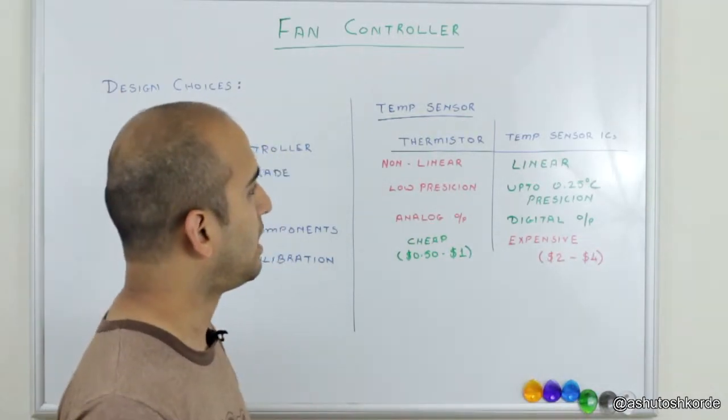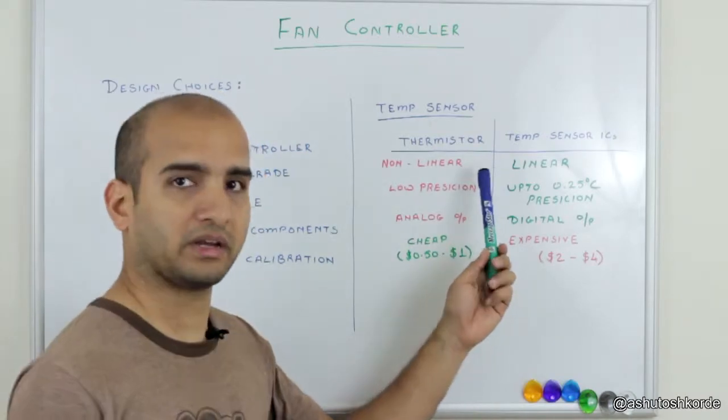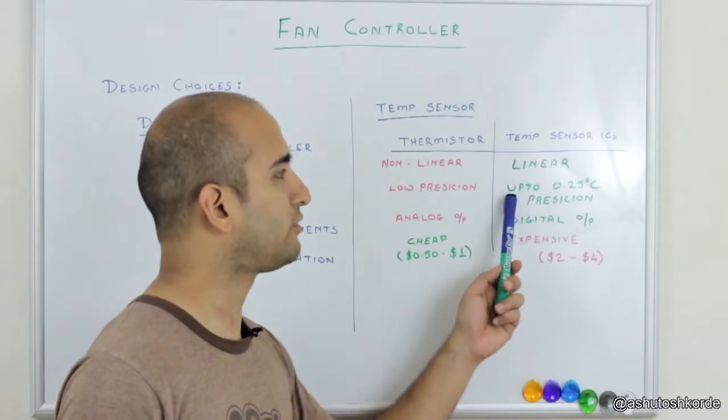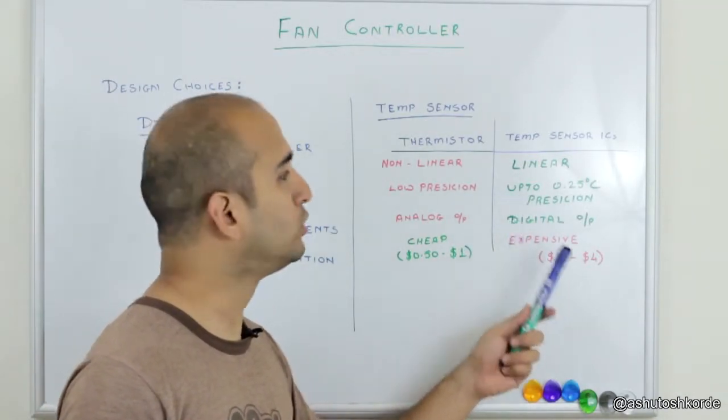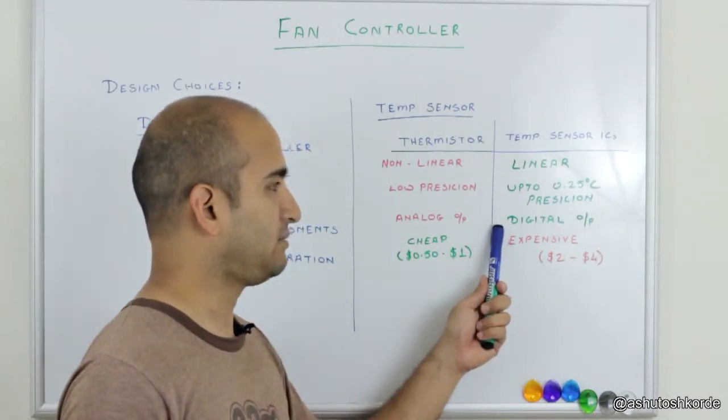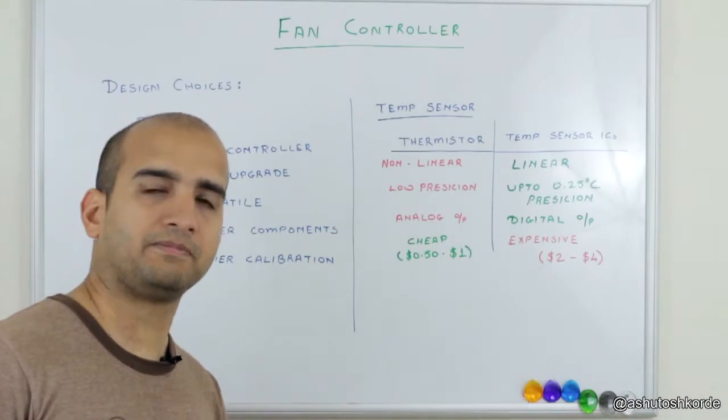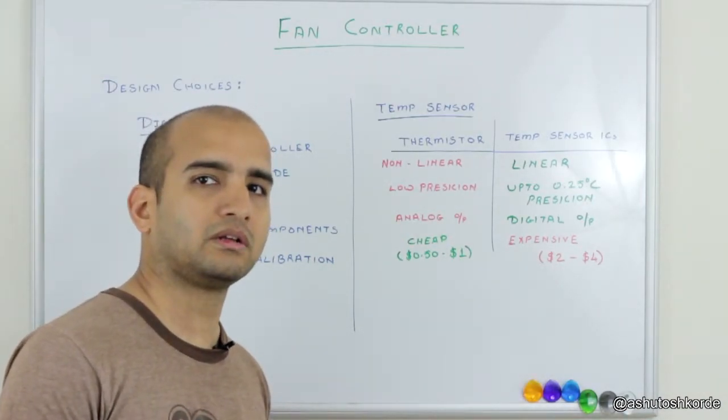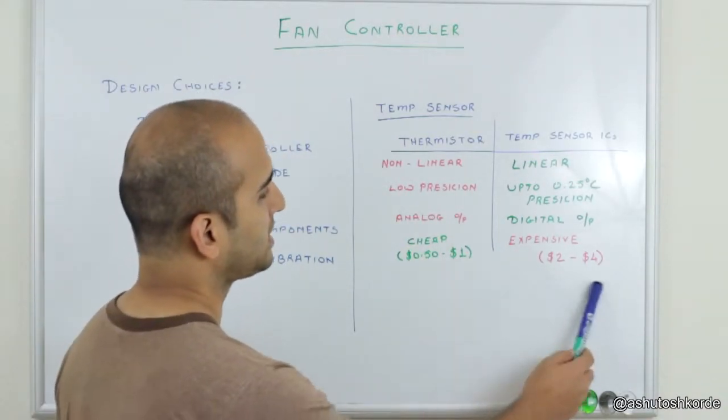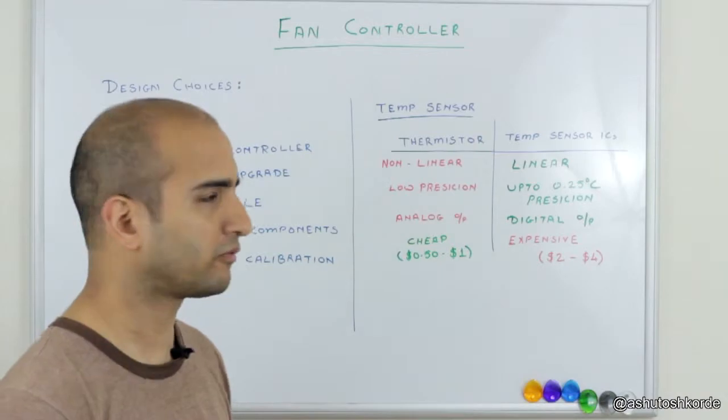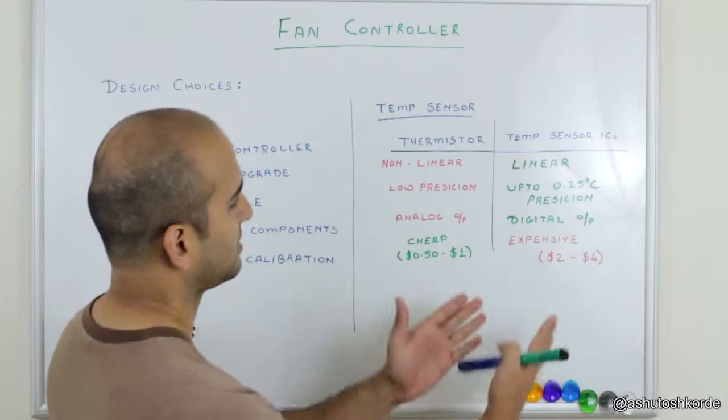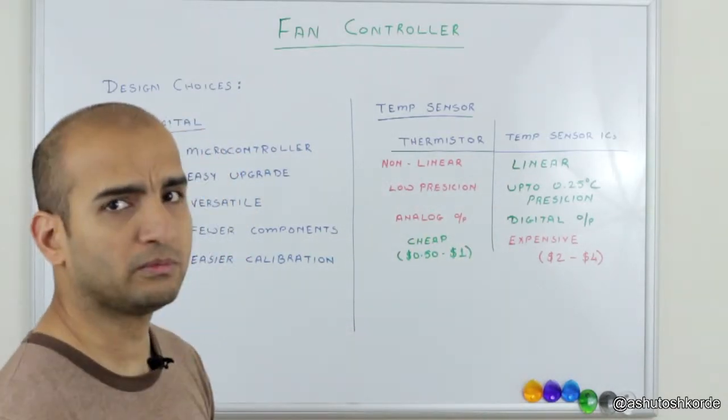are fairly linear in their operating range. They can offer precision up to 0.25 degrees centigrade. They sometimes have a digital output as well instead of just a varying analog voltage, which can be nice at times. But these ICs are fairly expensive,